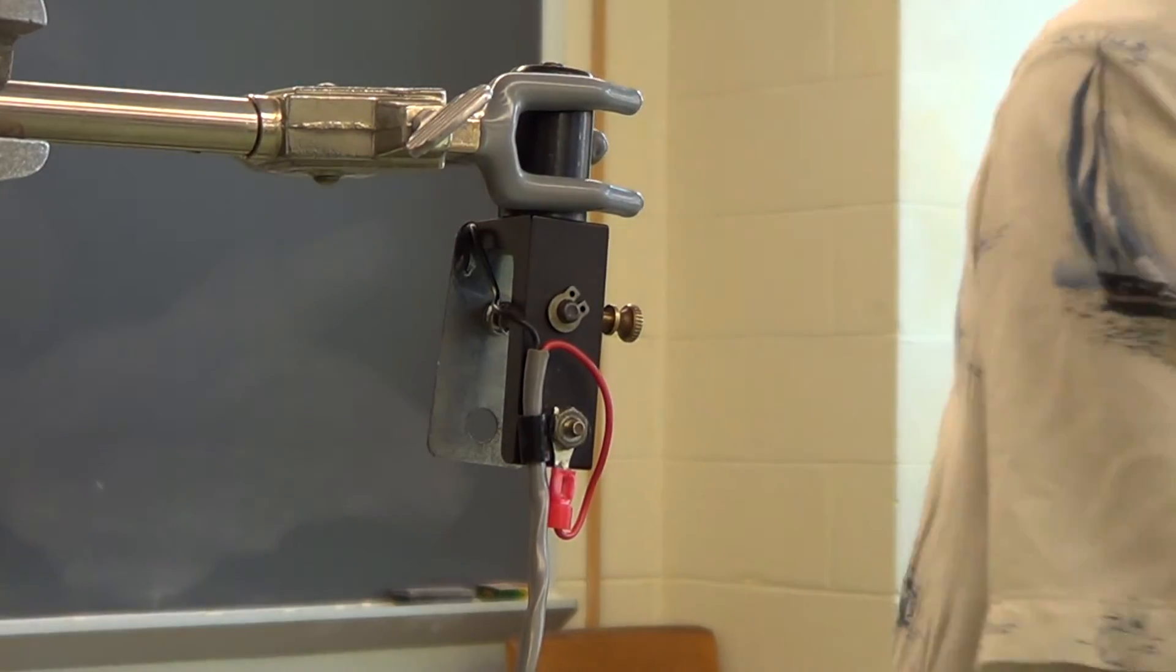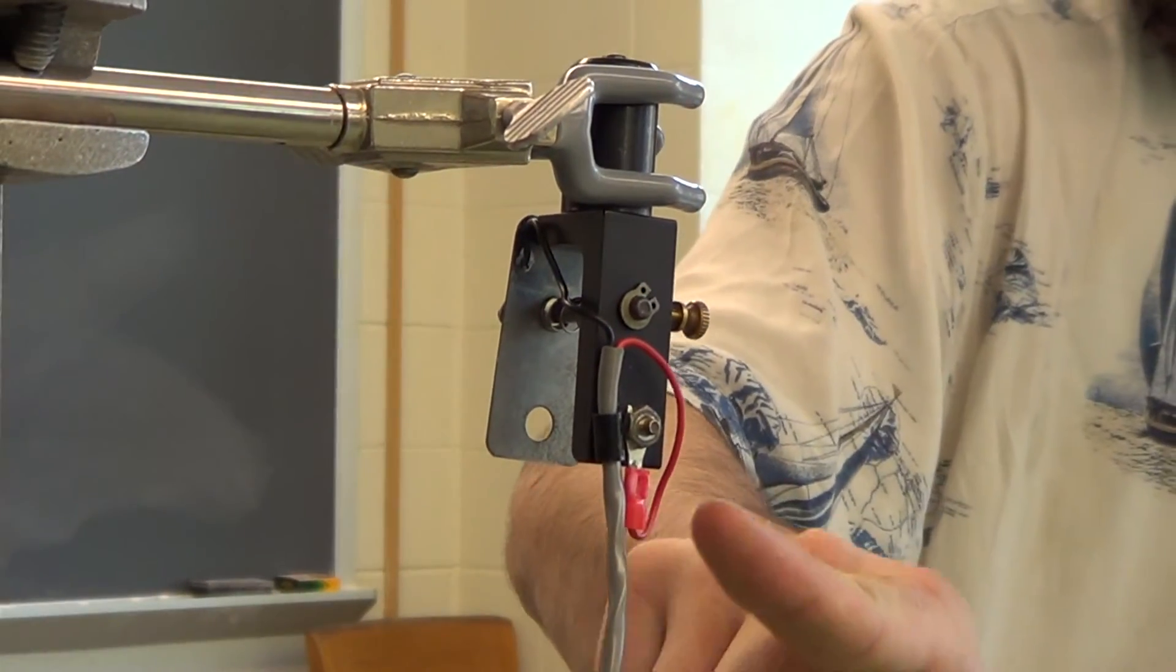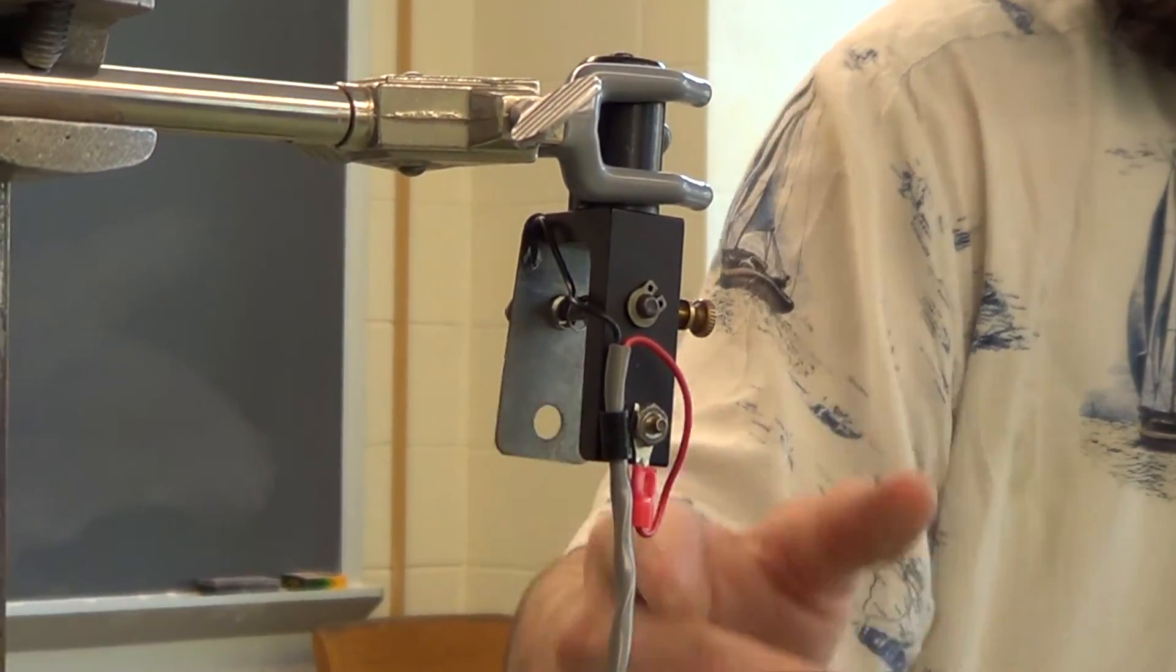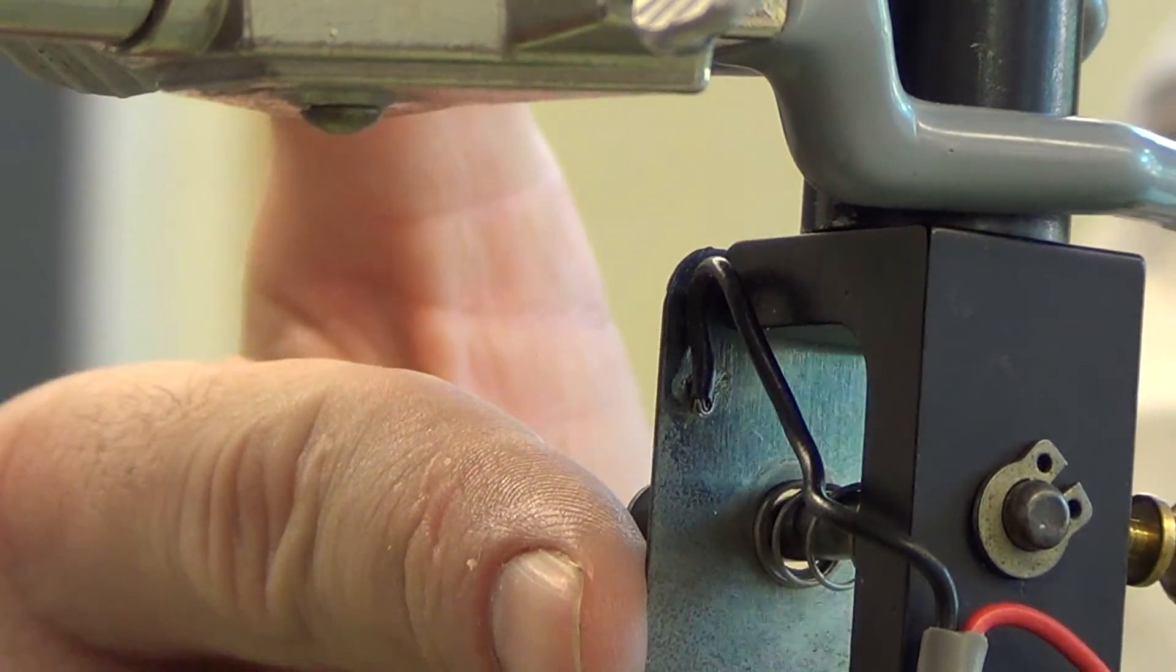In case the electrical contacts on this sensor break, please notice that the red wire is connected to the copper pad, and the black wire comes around and is connected to the ball dropper plate.